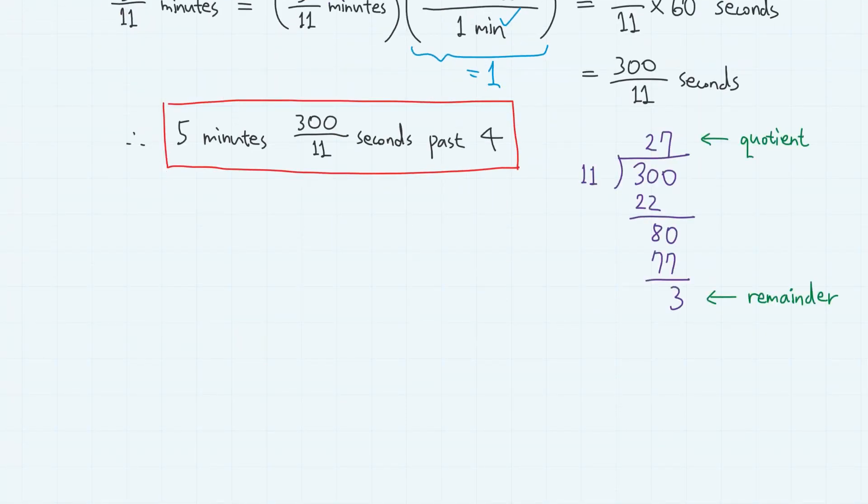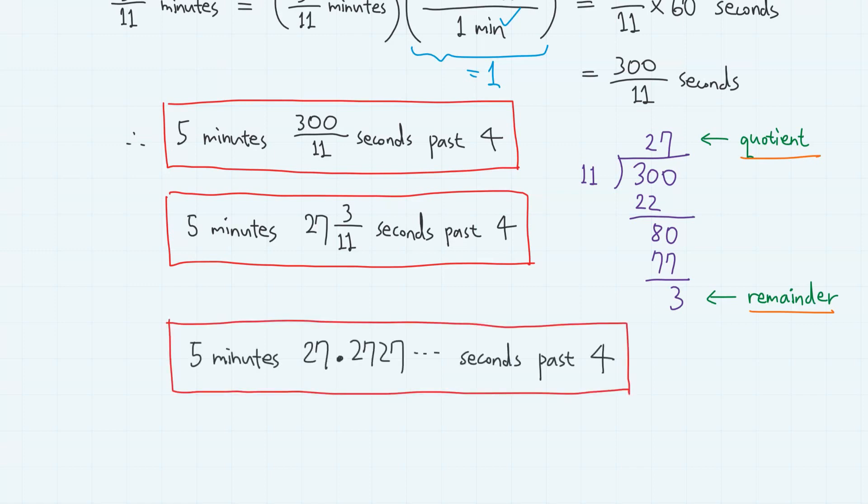Or if you do the division again, we have quotient 27 and remainder 3. So 5 minutes 27 and 3 over 11 seconds past 4. Or using decimals, approximately 5 minutes 27.2727 seconds past 4.